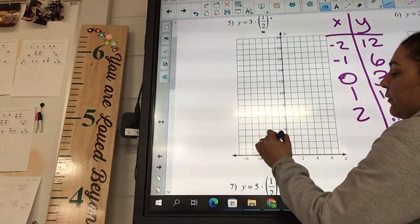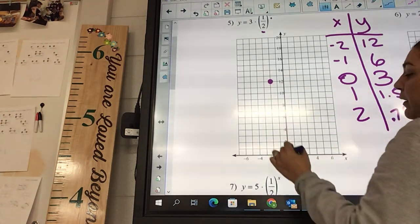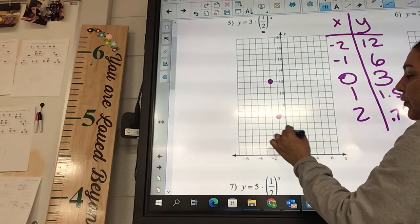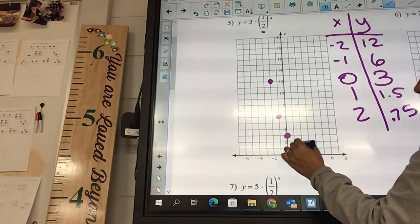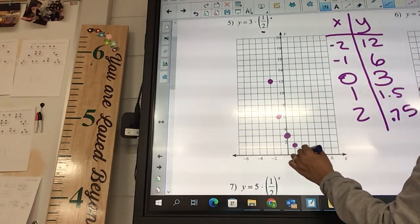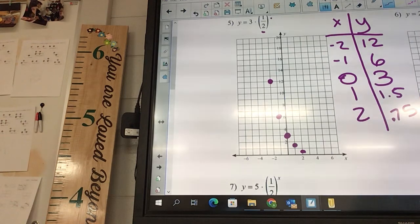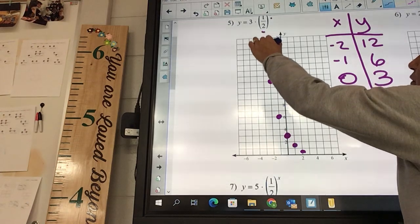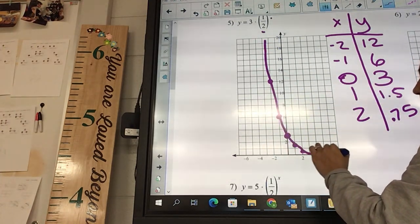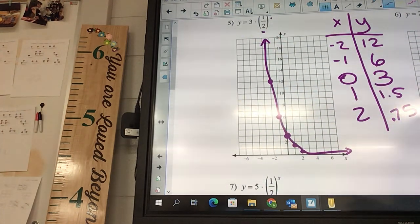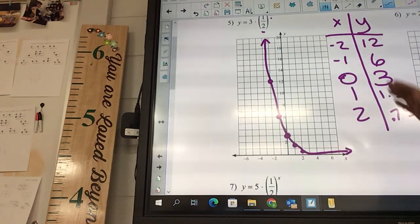So negative 2 is going to be at 12. Negative 1, 6. 0, 3. 1 and 1.5. And 2 and 0.75. And again, this is decay. So it should be going from really high up and then going down. It's kind of like, I don't know, if you kept gambling all your money away. If you win the lottery and you have all this money and you keep going by lottery tickets and lottery tickets and lottery tickets and keep losing, eventually your money is going to run out. And then we're going to draw our arrow. And we're going to connect all our dots and it's going to cave down this way. Your graph should look somewhat like mine. I should have two arrows. One going flat and then the one way up at the top.